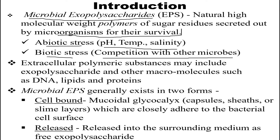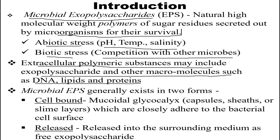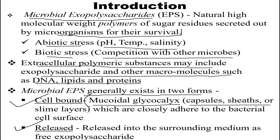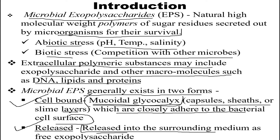These extracellular polymeric substances may include exopolysaccharides and other macromolecules such as DNA, lipids, and proteins. Microbial exopolysaccharides generally exist in two forms: a cell-bound form and a released form. In the cell-bound form, they are present as mucoidal glycocalyx, capsules, or slime layers, closely attached to the bacterial cell surface. In the released form, they are released into the surrounding medium as free exopolysaccharides.